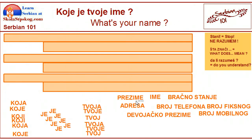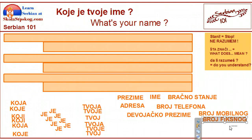Let's repeat the words once slowly and then we're going to make sentences, questions and answers. Prezime, prezime, ime, ime, adresa, adresa, broj telefona, broj fiksno, broj mobilnog, devojačkog prezime i bračno stanje. Nadam se da razumete šta znače ove reči — I hope you understand what these words mean.